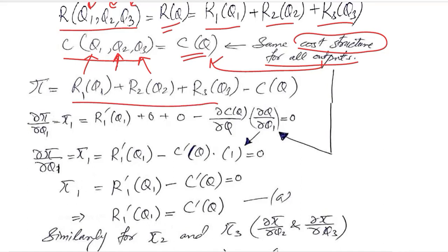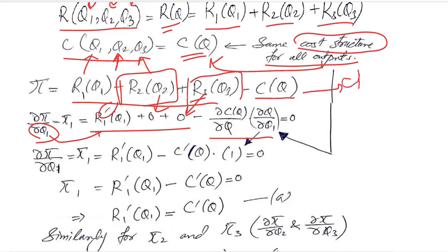Now we write the revenue function and the cost function and we differentiate it with respect to Q1. So this is revenue and this is the cost after differentiation. R2 and R3 are reduced to zero because they don't have Q1 in them, whereas this term is having bar after getting differentiated with respect to Q1. And here chain rule is being applied because there is indirect dependence.